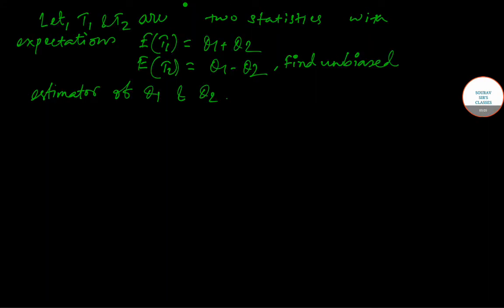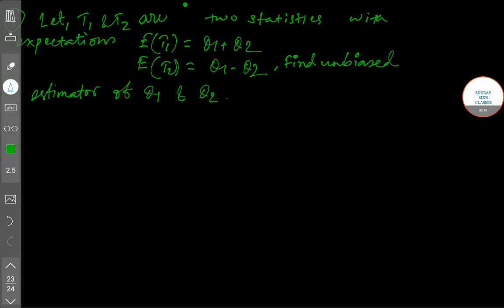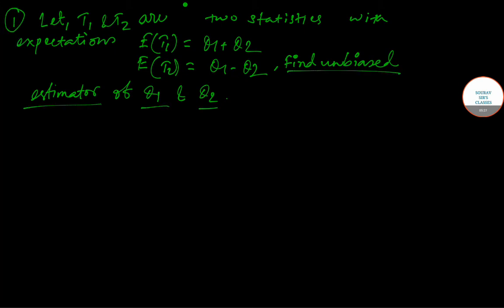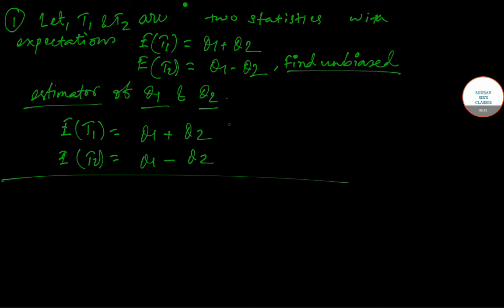After discussing about accuracy, biasness, and precision, I am now solving a problem. The question is: let T1 and T2 be two statistics with expectation of T1 equals theta1 plus theta2, and expectation of T2 equals theta1 minus theta2. Find the unbiased estimators of theta1 and theta2.